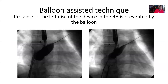The balloon-assisted technique has also been described. You basically use your sizing balloon as a body that prevents the left disc from prolapsing into the right atrium. As you deploy the device, you can then retract your balloon and complete the closure.